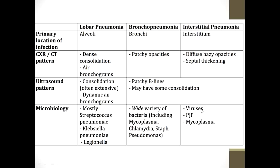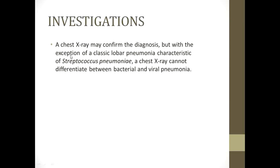Interstitial pneumonia is due to viruses and organisms like Pneumocystis jirovecii pneumonia (PJP) and Mycoplasma. Regarding investigations: with the exception of classical lobar pneumonia, which is characteristic of Streptococcus pneumoniae, chest X-ray cannot reliably differentiate between bacterial and viral pneumonia. Even a lobar appearance is suggestive but not 100% confirmatory for Streptococcus pneumoniae.